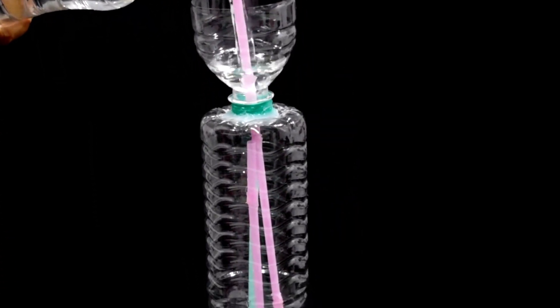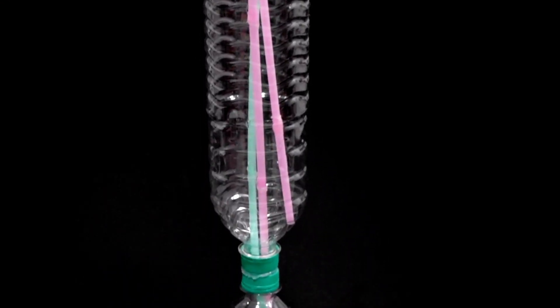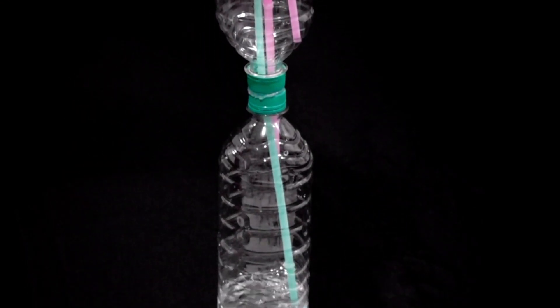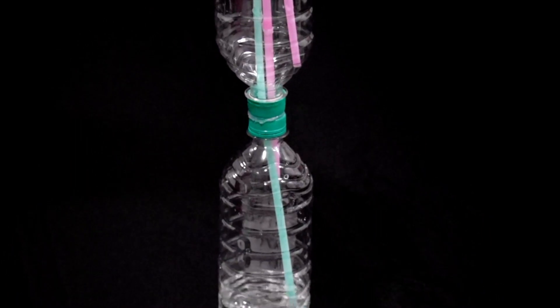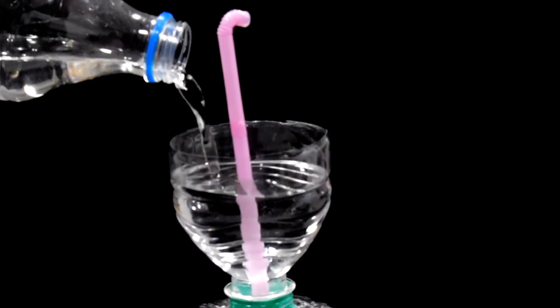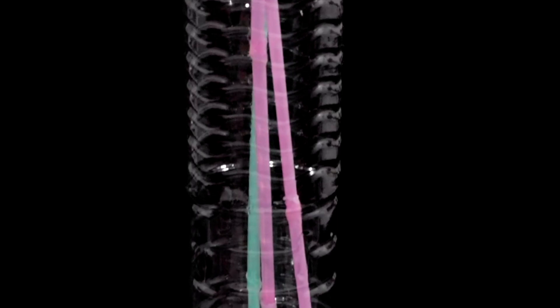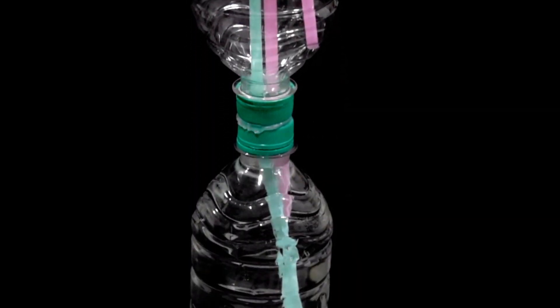To use it we first need to prime it, which we do by pouring water in the top. Water runs through the green straw and fills up the bottom bottle.